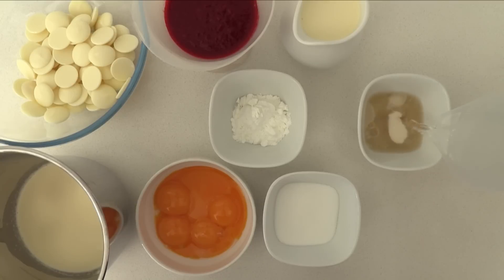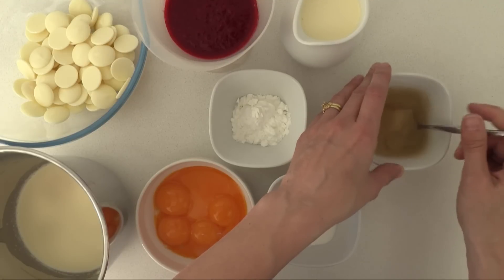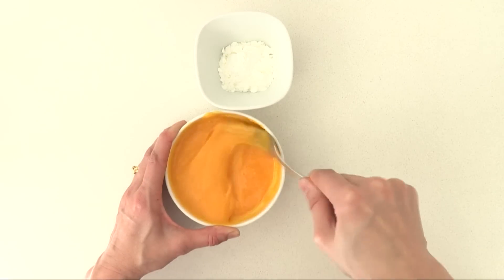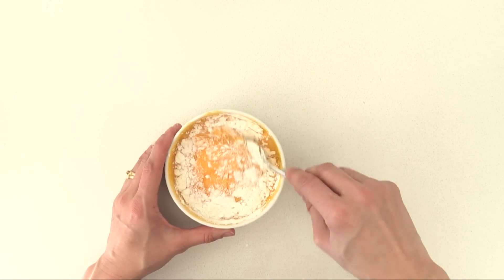Add the cold water to the gelatin and stir that through until it is smooth and then leave that to absorb all of that water. Whisk together the sugar and the egg yolks then add the corn flour into that and mix it in really well.